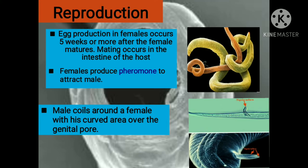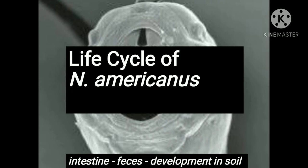Sexual maturity is reached at the final molt. Egg production in females occurs 5 weeks or more after the female matures. Mating occurs in the intestine of the hosts, which are humans. Males are required to find females and inject their sperm into the females. Females may produce a pheromone to attract males. The male coils around a female with a disturbed area over the female genital pore.